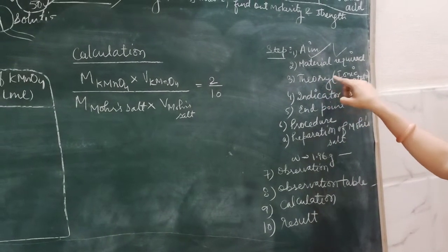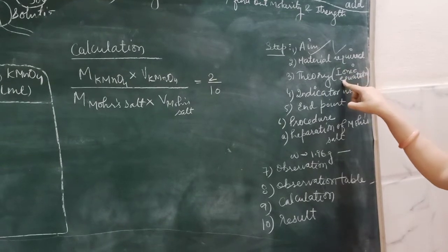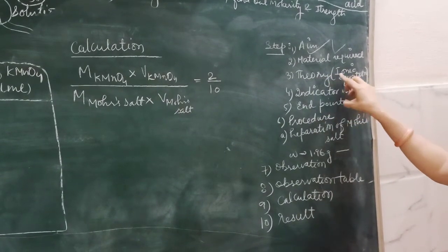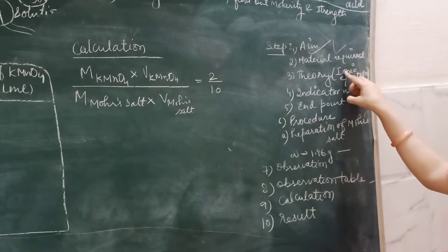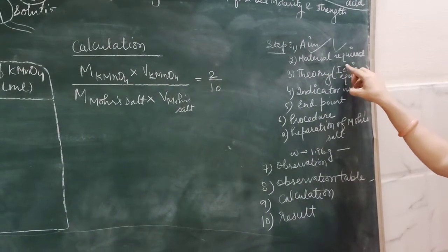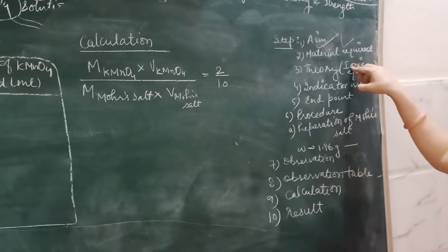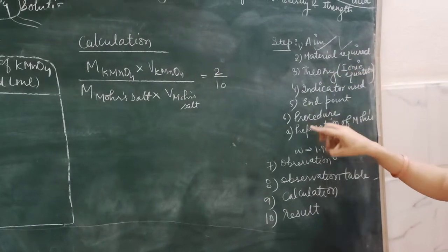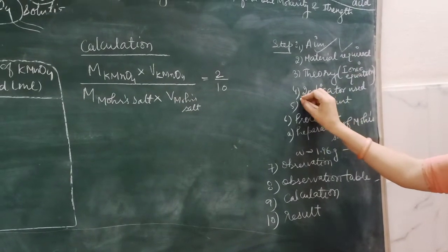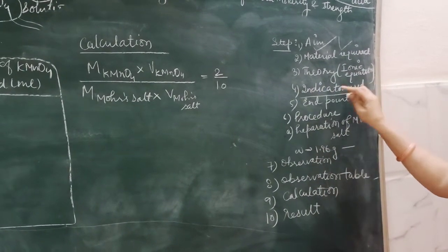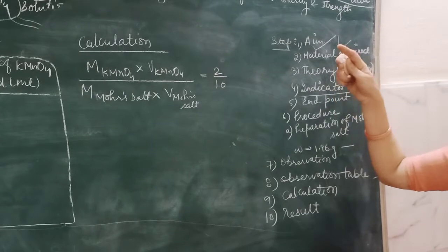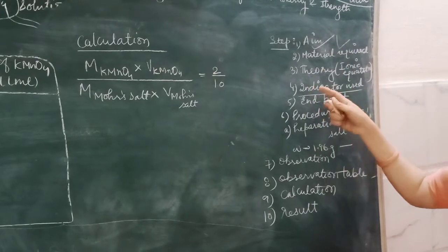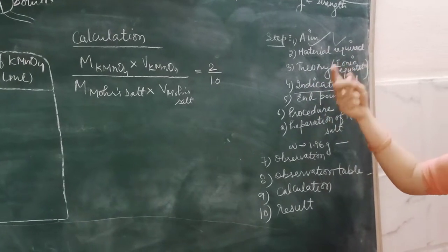Third is the ionic equation. In theory, you will only write the ionic equation — nothing else — in the final exam. I have explained the ionic equation in the last video. After that, we will use an indicator which will show the end point.